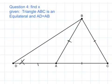This means we know that the sides of the equilateral triangle are all the same, and that AB and AD are also equal.